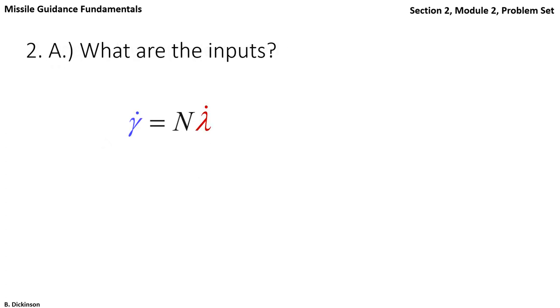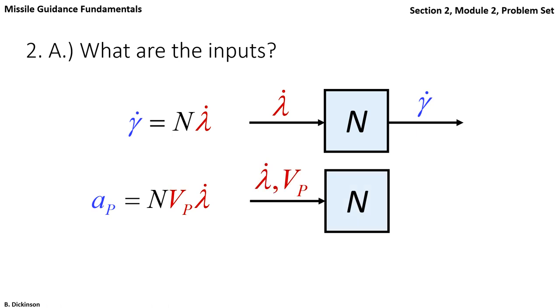What are the inputs? Here's the gamma dot form of pure pronav. The input is line of sight rate multiplied by n gives gamma dot. Acceleration form. We have a velocity term now that is an input. The output is acceleration.